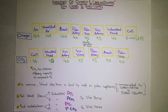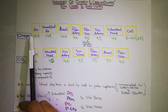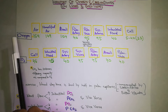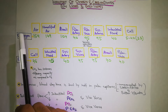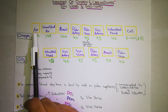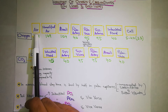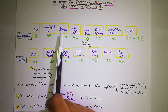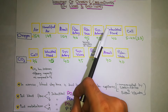اب اگر ہم دیکھیں کہ Oxygen کہاں پر ہوتی ہے۔ Oxygen ہوتی ہے Air میں۔ اب Air سے Oxygen نے کہاں پر چلے جانا ہے جب ہم سانس لیں گے؟ Alveoli میں، اور پھر وہاں سے Blood میں چلی جائے گی Oxygen۔